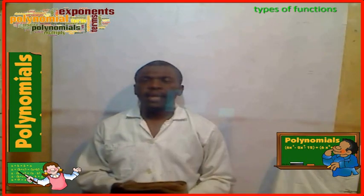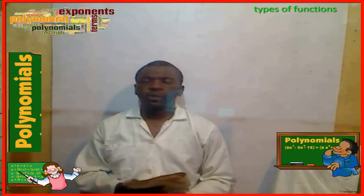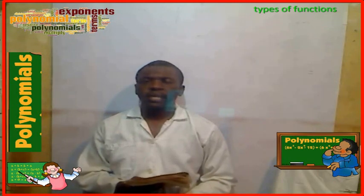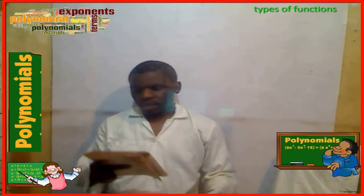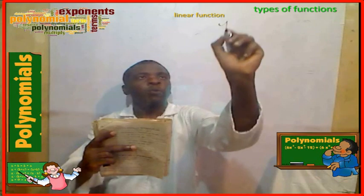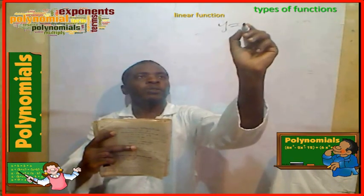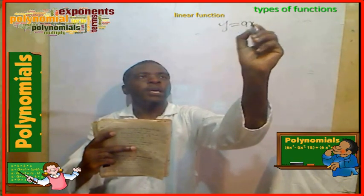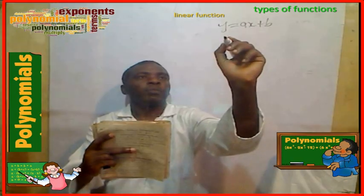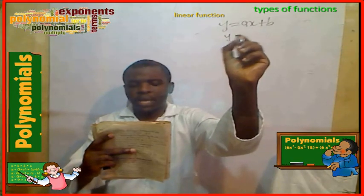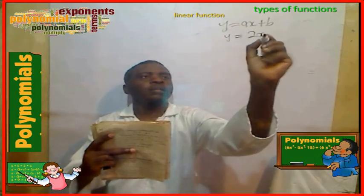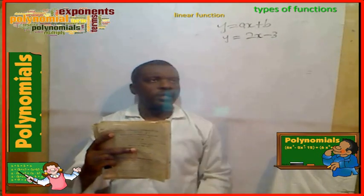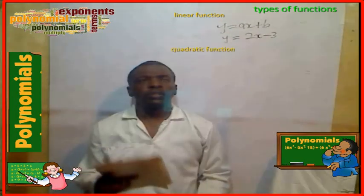Types of functions. One: the linear function. Example: y = ax + b. For instance, y = 2x minus 3. These are linear functions.